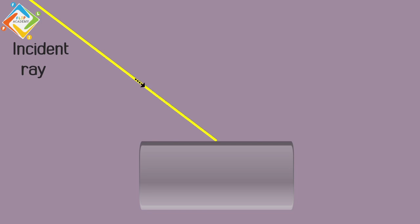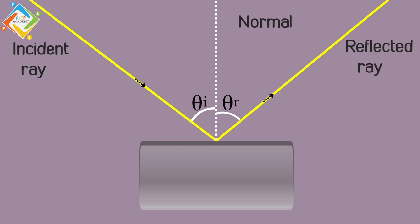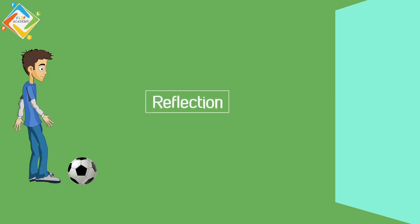When a light ray strikes any surface, it reflects at the point of incidence. At that point, we draw a perpendicular called the normal, and we compare angles — the angle of incidence. Think of a ball hit against a wall — the ball bounces back. That bouncing is basically reflection. The same phenomenon of reflection that light follows is also followed by sound.